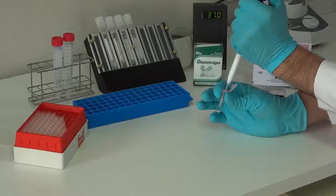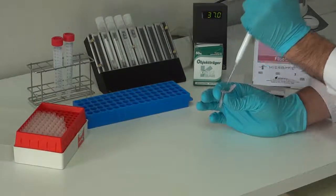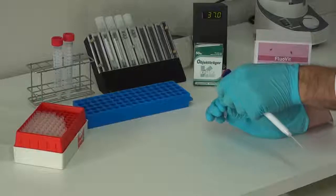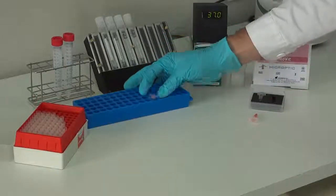Mix gently with the micropipette and keep the Eppendorf in the incubator at 37 degrees centigrade for five minutes.